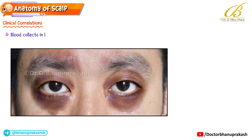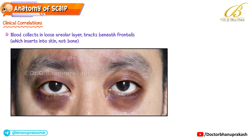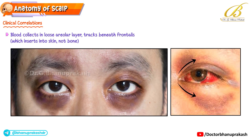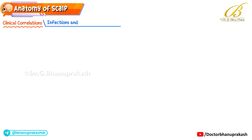Another interesting clinical observation is the classic black eye after a forehead injury. When the forehead is struck, blood collects in the loose areolar tissue — the dangerous layer. Since the frontalis muscle inserts into the skin and not the bone, the blood can freely track downward and settle into the eyelids, leading to periorbital ecchymosis even when the injury was far above the eye.